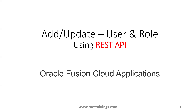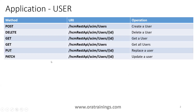Welcome to rotrainies.com. In this session we'll discuss how to add or update a role to a user using REST API. Let's first understand what REST APIs are available for the application user in Oracle Fusion. The first one uses a POST method for creating a user, and we also have delete a user, get a user, get all users, replace a specific user, and update a specific user. Where we have an ID, it is a user GUID.